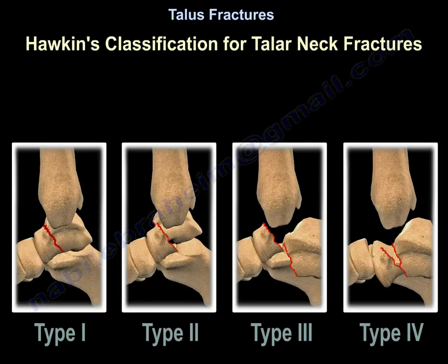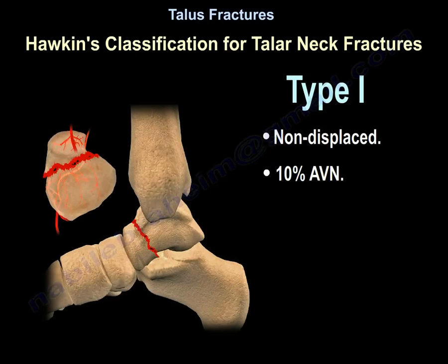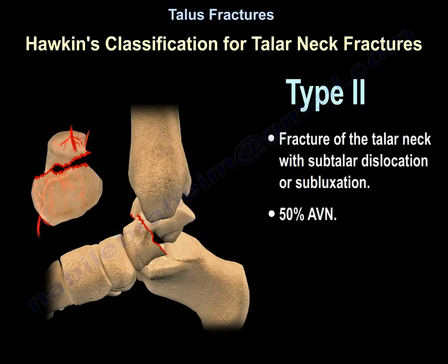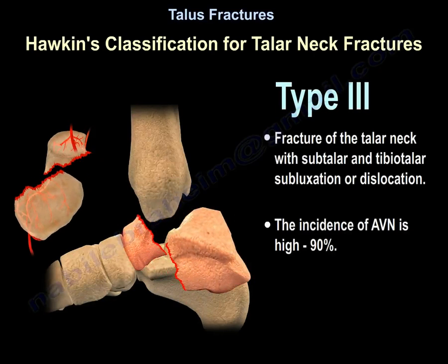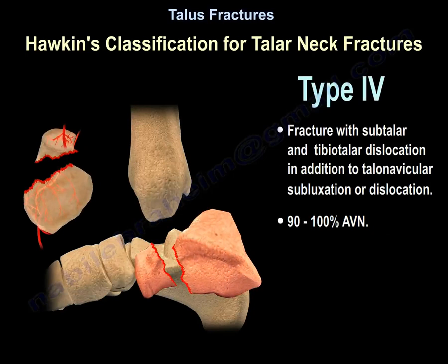Hawkins classification for talar neck fractures: Type 1 is a non-displaced fracture with 10% avascular necrosis. Type 2 is fracture of the neck with subtalar dislocation or subluxation and 50% AVN. Type 3 is fracture of the talar neck with subtalar and tibiotalar subluxation or dislocation, with AVN incidence of approximately 90%. Type 4 is fracture of the neck with subtalar and tibiotalar subluxation or dislocation with talonavicular joint involvement, with AVN incidence of approximately 100%.